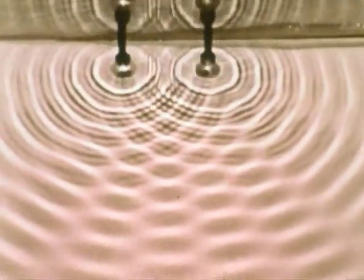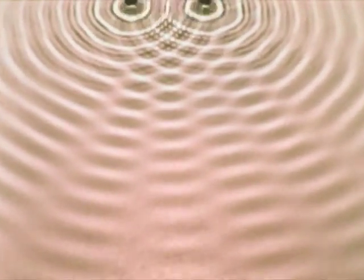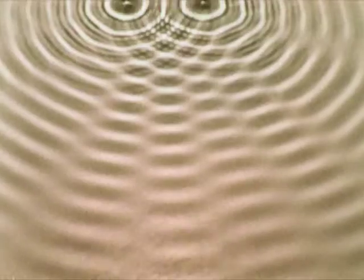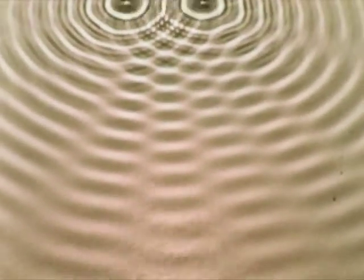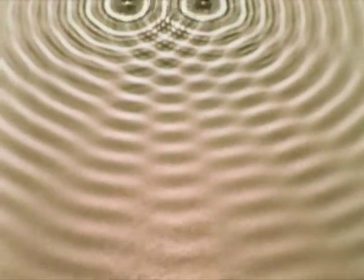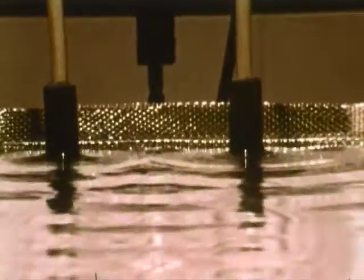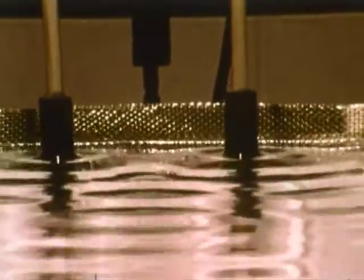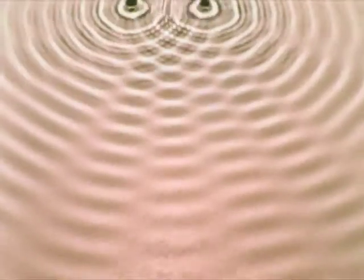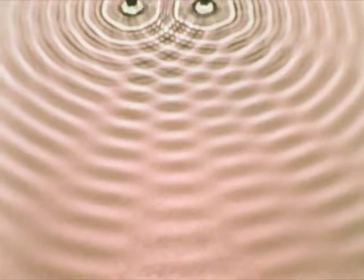Here are two pure wave sources of equal amplitude and frequency. Notice the areas of motion and calm in the water. A time exposure looks like this. As long as the frequency and amplitude of the two sources are constant, an interference pattern will be formed wherever they cross.